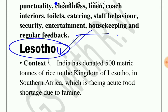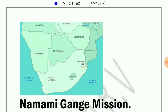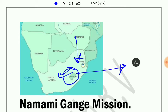Lesotho is a place in Africa and it is in news because India has donated 500 metric tons of rice to the Kingdom of Lesotho, as they are facing acute food shortage due to famine. We should look at the location of Lesotho in the world map. Lesotho is located in southern Africa, and UPSC could ask questions about the location of such places on the world map.